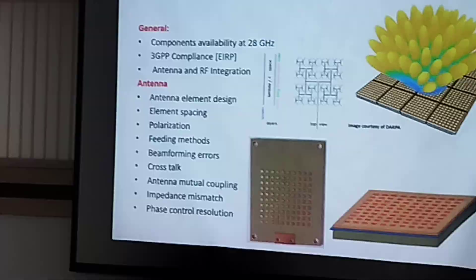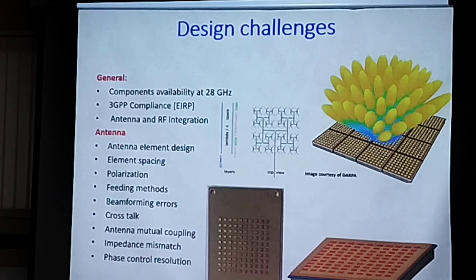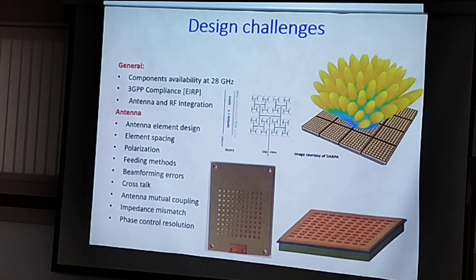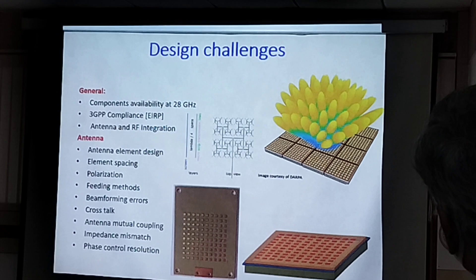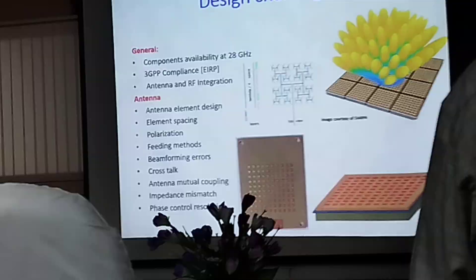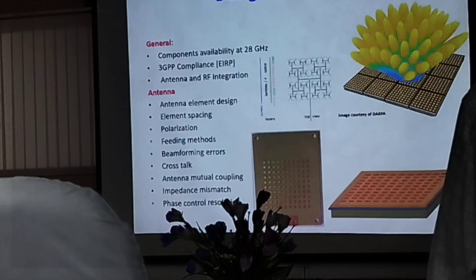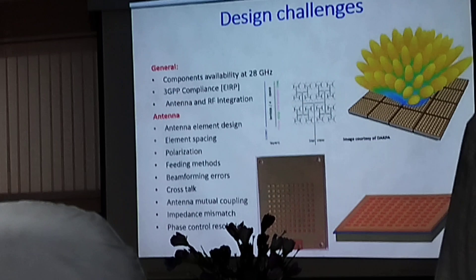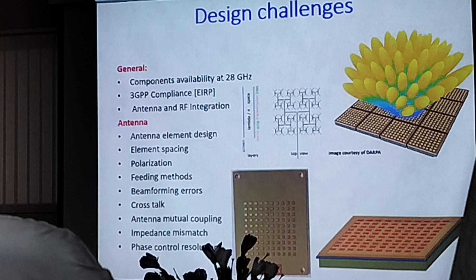As an antenna design engineer at higher frequencies, for the 5G compact base station application, the first challenge is component availability — for that particular frequency, the amplifiers, filters, and other RF components need to be chosen. Then, how do you integrate the RF components with the board? When it comes to antennas, you have to select what type of antenna element and what type of feeding to fix. The element spacing in arrays is 0.5 lambda. You need to decide what type of polarization, what is your mutual coupling level, and what are your phase control mismatches.